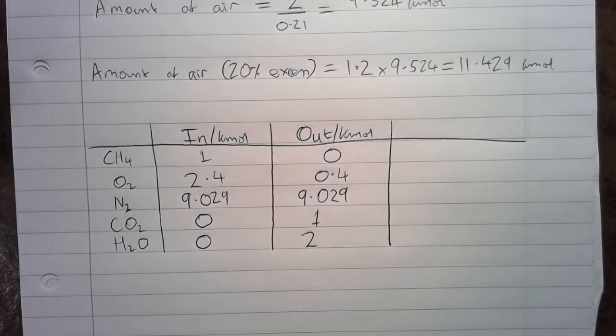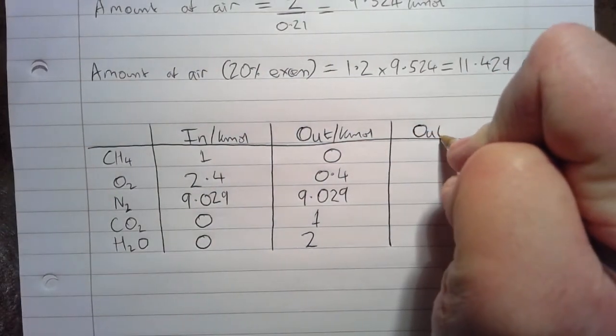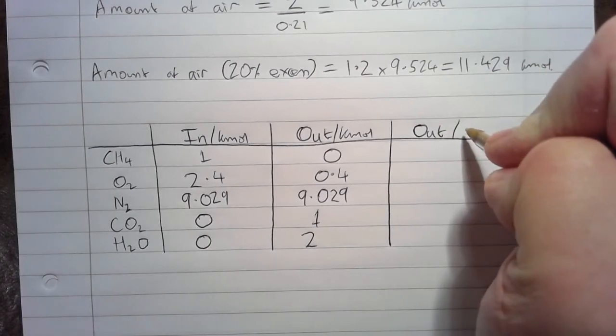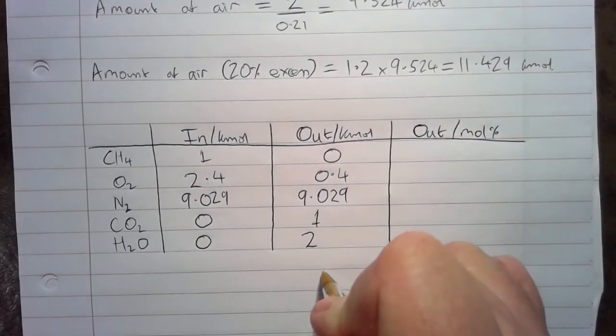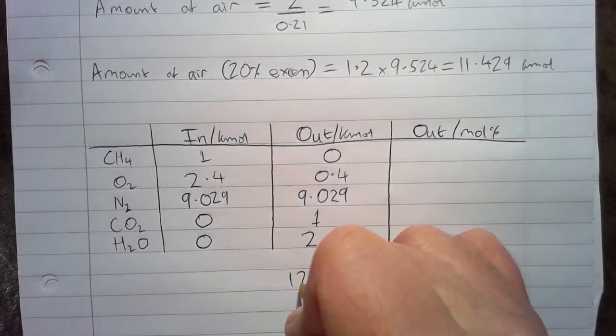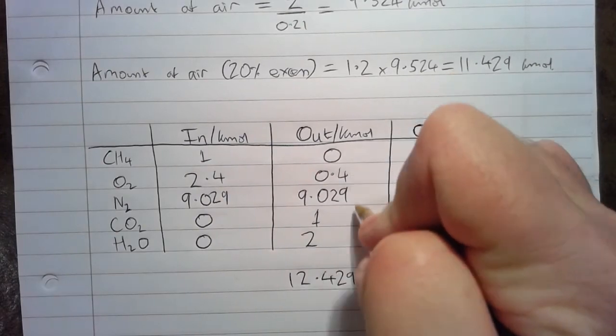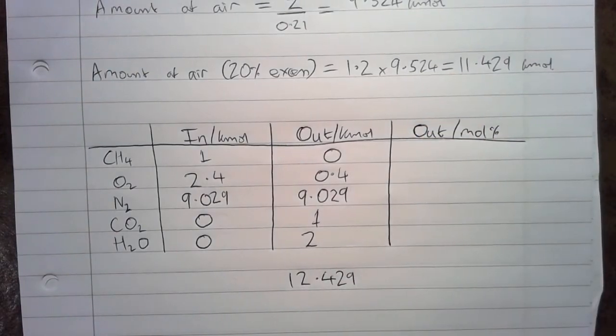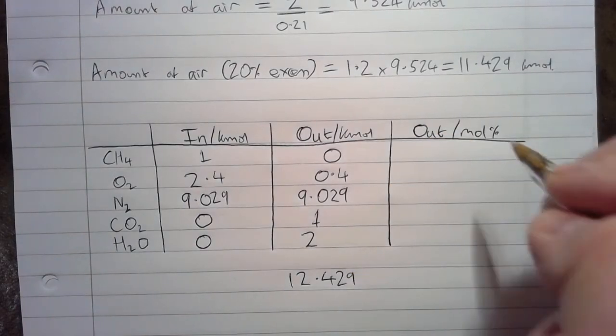To complete the question, we need to work out the mole percent of the different components in the outlet. To do that, first of all, we need the total, 12.429. We total up these numbers here, and then we can work out each of these as a percentage of that total.